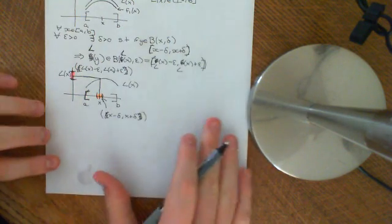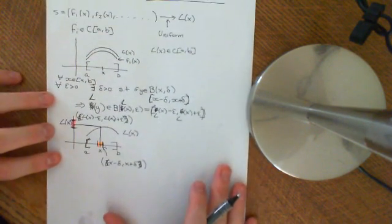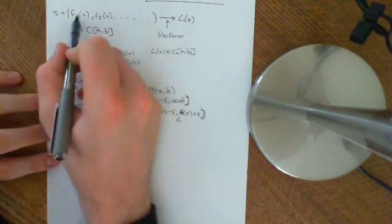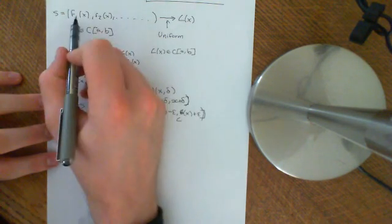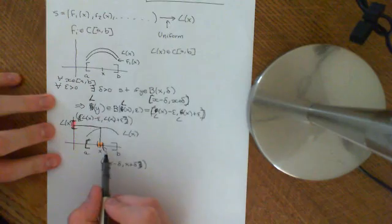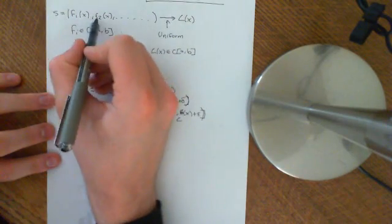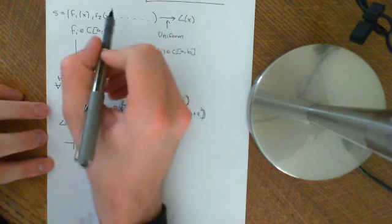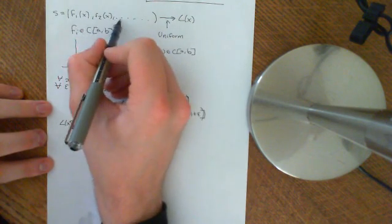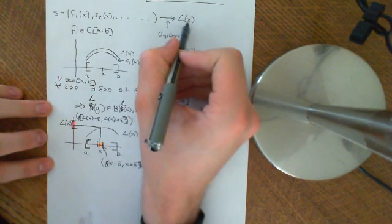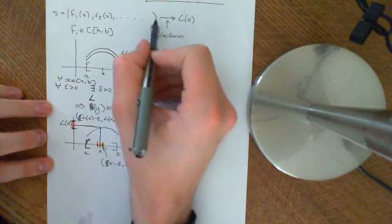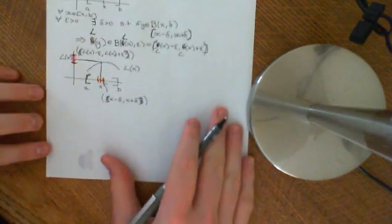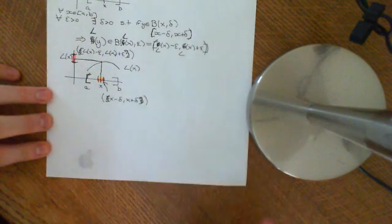So that's what continuity on the interval AB means. We want to prove that if the sequence of functions are all continuous — so this holds for all functions in the sequence — and this sequence converges uniformly to L(x), then L(x) also satisfies the condition of being continuous.